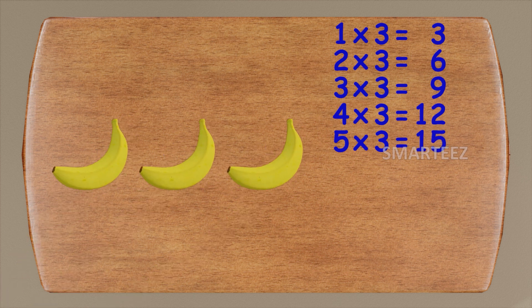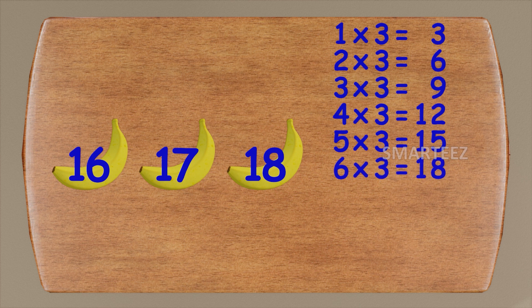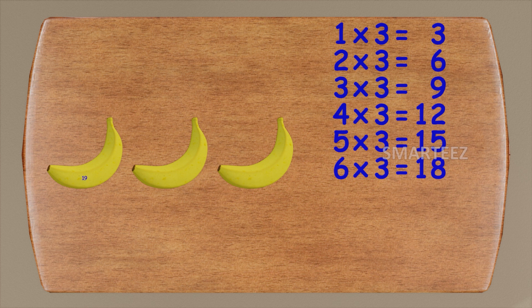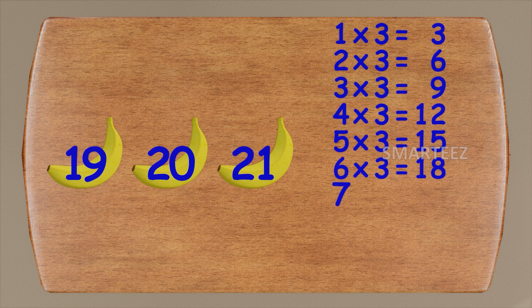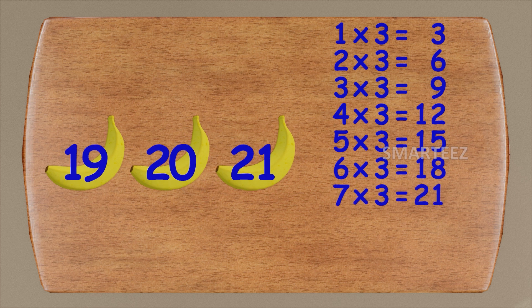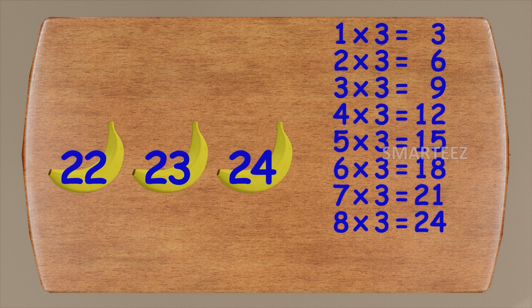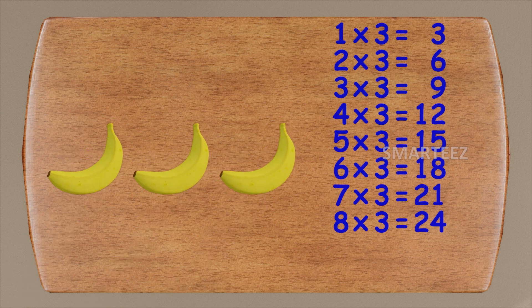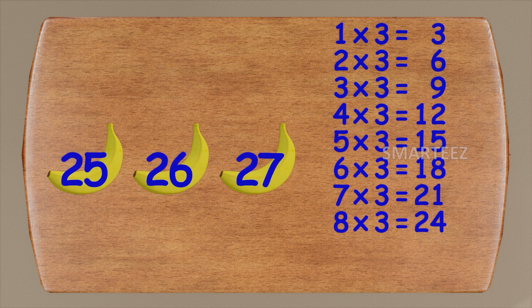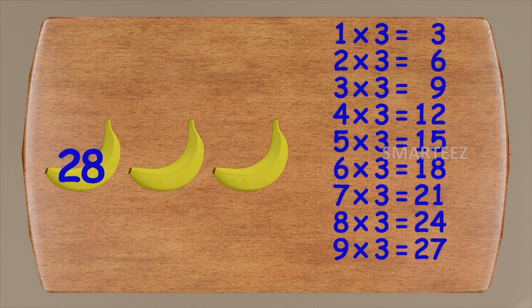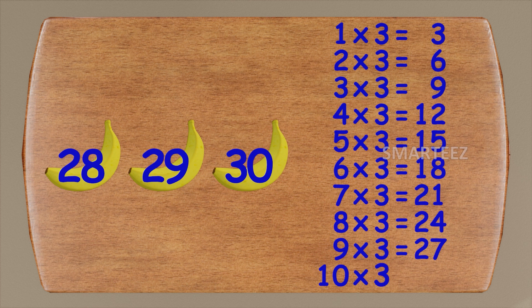Let's add three more. We had fifteen earlier — this will be sixteen, seventeen, and eighteen. Six times three is eighteen. Let's add three more — this will be nineteen, twenty, and twenty-one. Seven times three is twenty-one. Let's add three more — this will be twenty-two, twenty-three, and twenty-four. Eight times three is twenty-four. Let's add three more — that will be twenty-five, twenty-six, and twenty-seven. Nine times three is twenty-seven. Let's add three more one last time — this will be twenty-eight, twenty-nine, and thirty. Ten times three is thirty. Oh yeah, that's a lot of bananas!